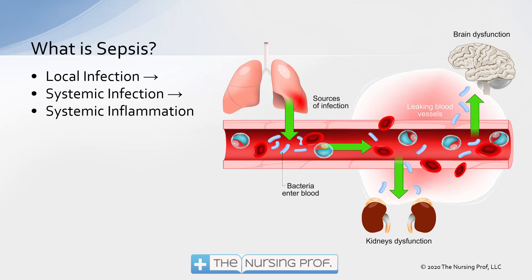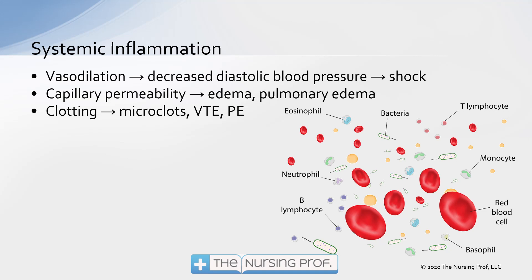As bacteria migrates to other parts of the body, we're getting inflammation there as well. Systemic inflammation causes three major conditions: vasodilation, capillary permeability, and clotting. Even with a local inflammation — like a cut on your hand — you get vasodilation, capillary permeability, and clotting. Hopefully we get clotting so you don't bleed to death. You may notice fluid oozing out — that serosanguinous fluid — and redness and swelling from vasodilation increasing blood flow to the area to help heal it.